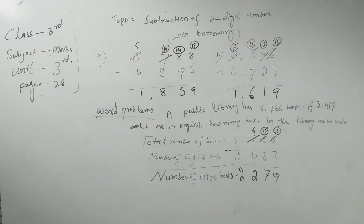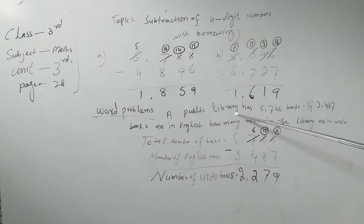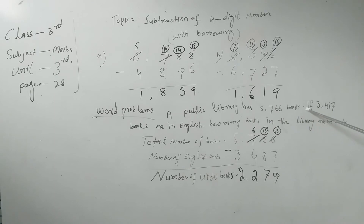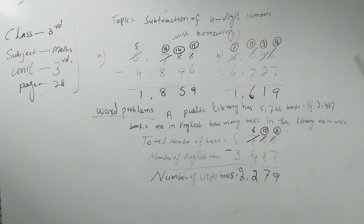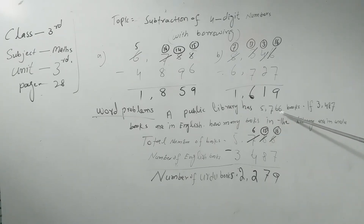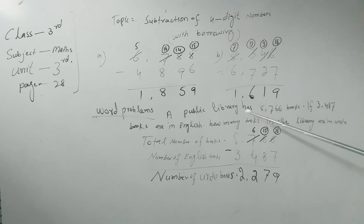Now the word problem. A public library has 5,766 books. If 3,487 books are in English, how many books in the library are in Urdu? The library has 5,766 books in total.